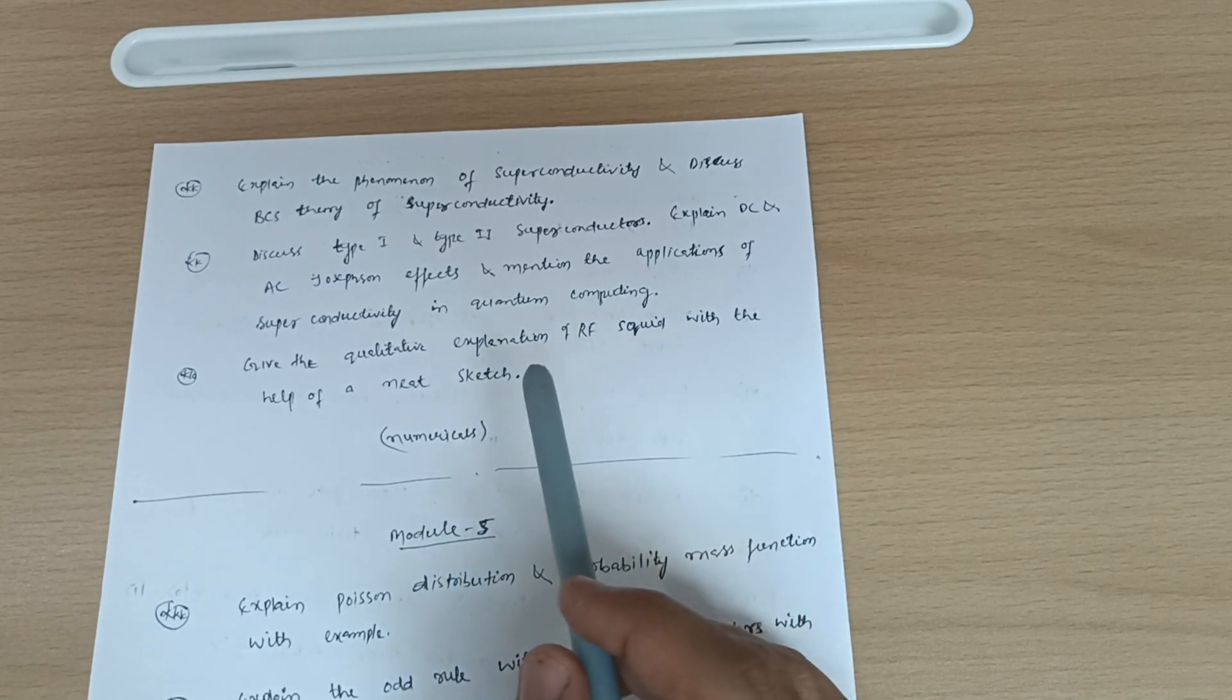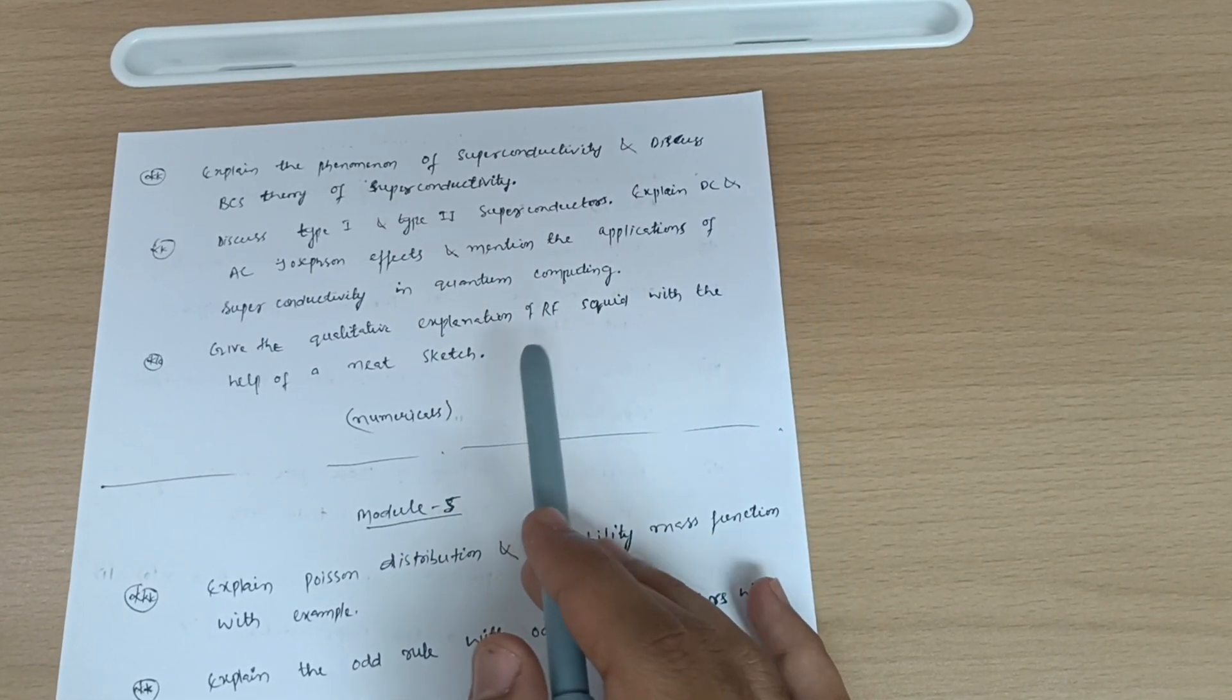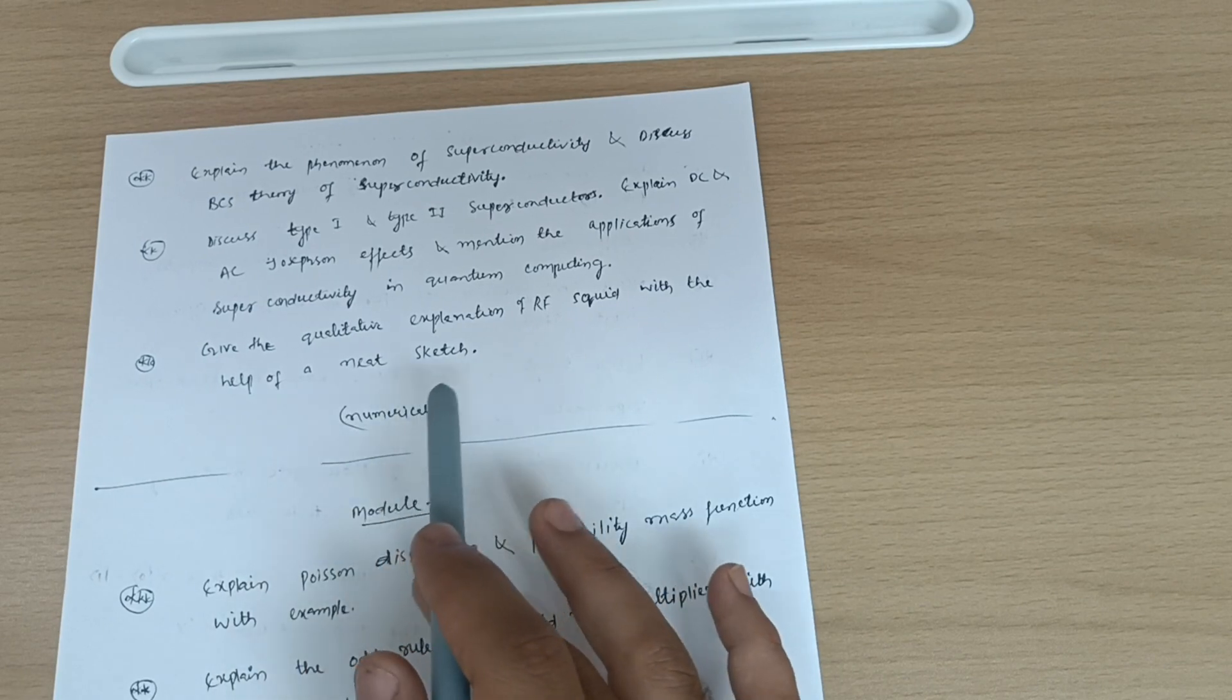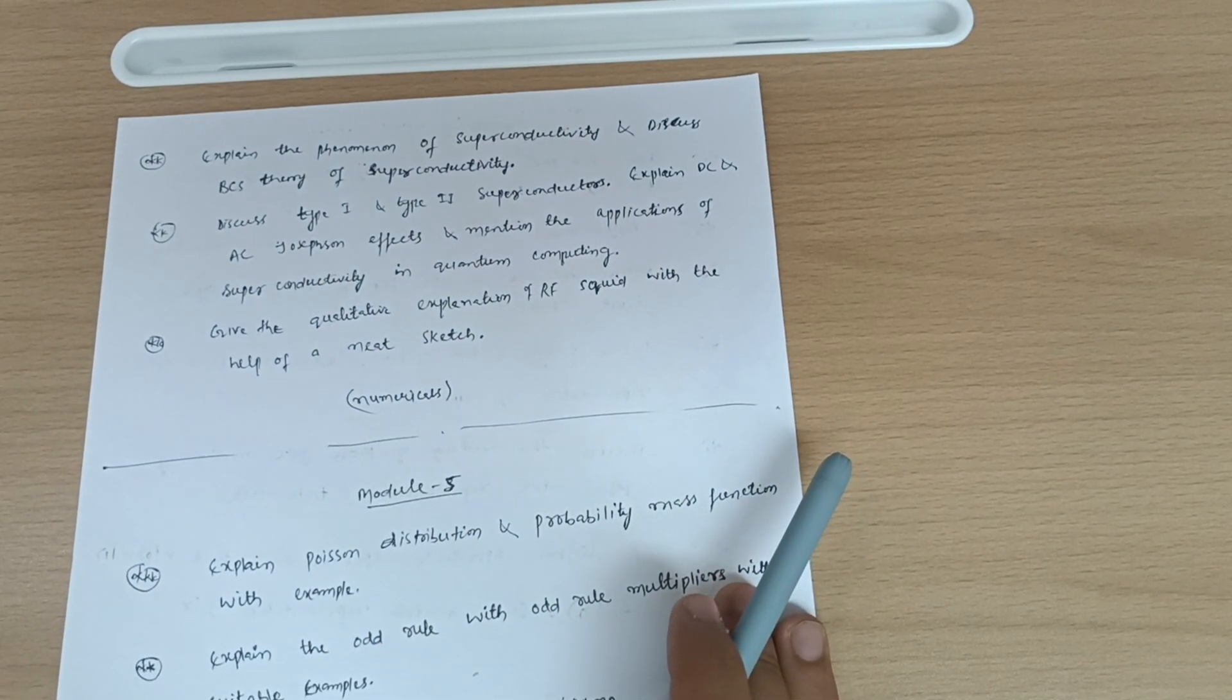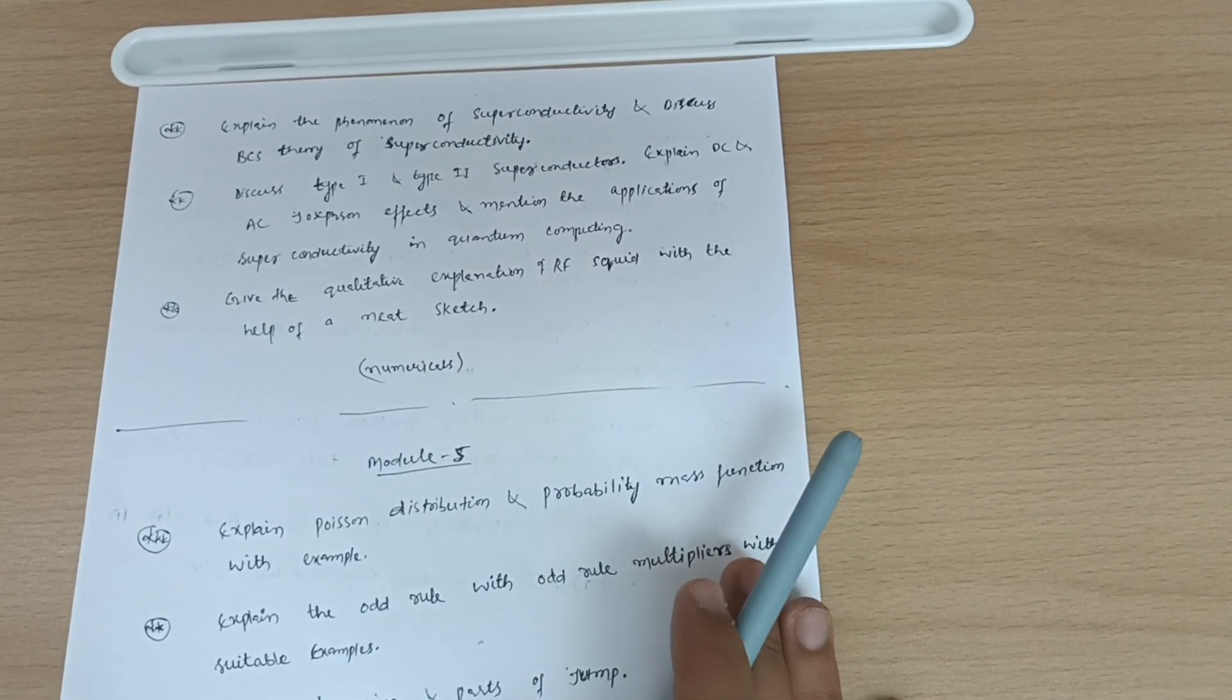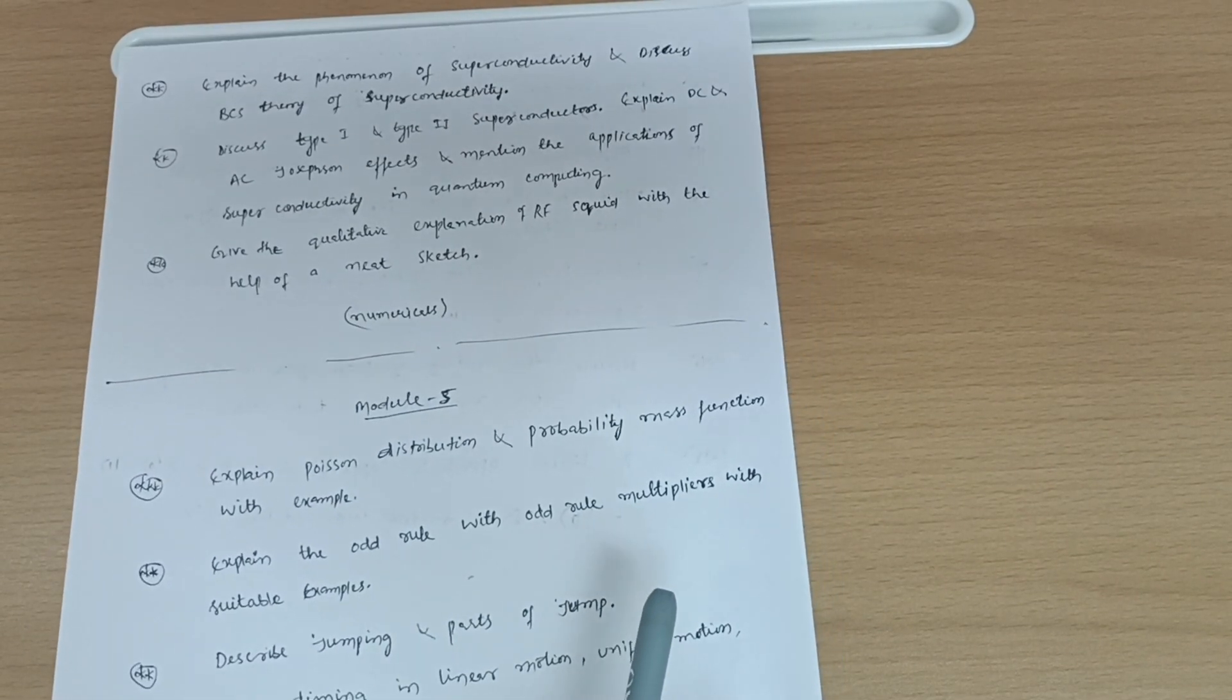You have to go through the numericals. Physics is the subject which can be passed with the theoretical portions only, but for the safer side, if sometimes VTU is setting the papers unexpected, definitely you should go through numericals also. Otherwise physics can be passed with theory only. If you just go through all the theoretical portions from all five modules, it becomes possible for a student to get at least 60 marks out of 100.